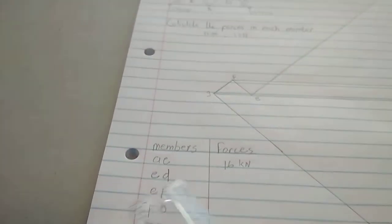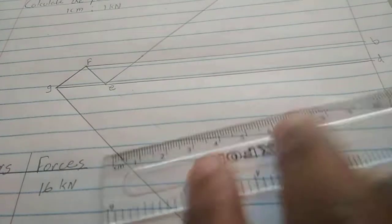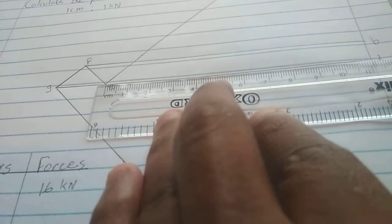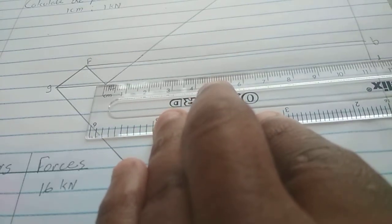The next one is ED. There is E there, D over there. So we put our ruler. 11.2 kilonewtons.